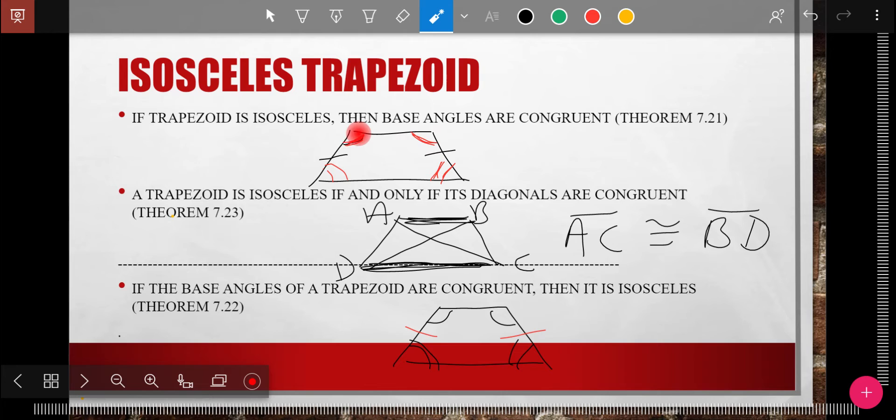We have base angles at the top base and the bottom base. Now it could be drawn sideways, so make sure you know which one the legs are. Basically, this side and this side are parallel, so they're the bases. And so the two angles that touch that parallel side and the two angles that touch this parallel side are congruent.